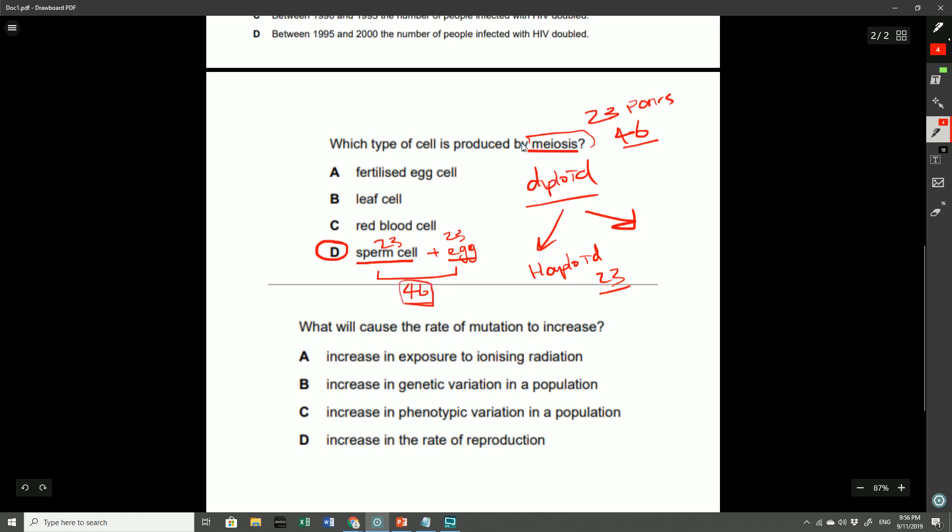If you didn't have that halving of the chromosome number when you form the gametes, imagine having 46 chromosomes in the sperm cell and 46 chromosomes in the egg cells. That means you'll end up with 92 chromosomes, and every generation you're going to get a doubling of the chromosome number, which is going to really screw things up. That's not what we want. Therefore, meiosis here is going to prevent that from happening.